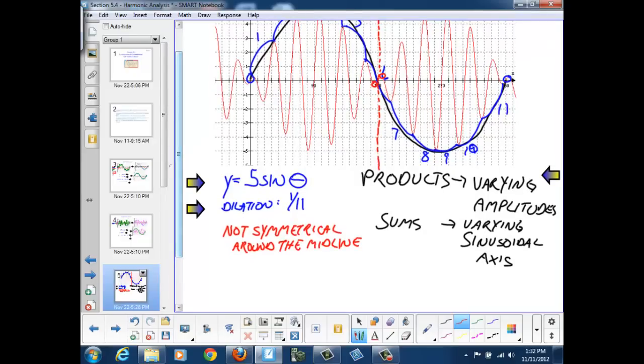So my second function is going to be cosine of 11 theta. We don't need any amplitude here because we've taken into account the amplitude on our first function.